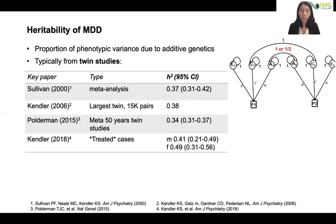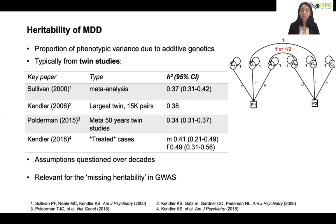The single largest twin study and the largest meta-analysis of all twin studies in the past 50 years have been conducted. A more recent study has a higher estimate, potentially due to higher severity in treated cases. Overall, the heritability estimates from twin studies are fairly similar. However, twin studies rely on key assumptions, especially the equal environments assumption between the two twin types, which was relevant in the missing heritability debate, as some suspected twin heritability might have been overestimated.